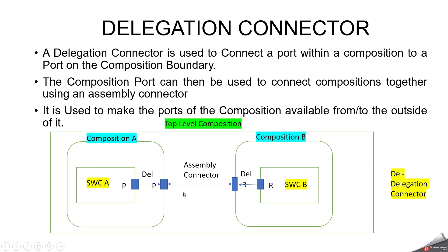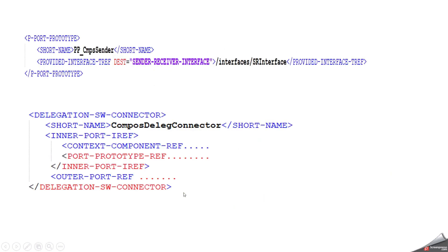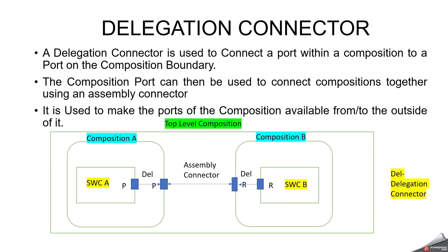So the basic difference between assembly connector and delegation connector is: within a composition, if you have two software components, then you can make an assembly connection between the ports. But if the software component is inside a composition, then you have to make a delegation connector. That is the difference between assembly connector and delegation connector.